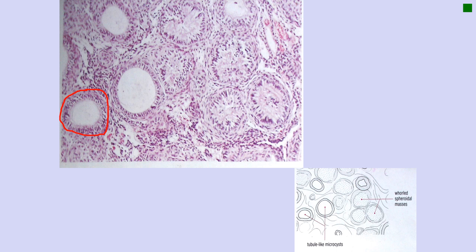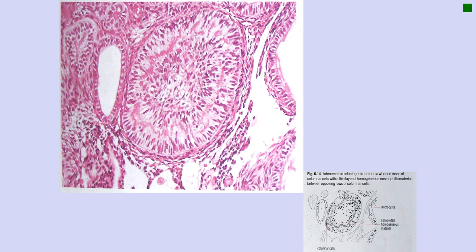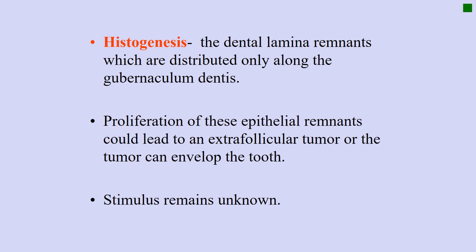The typical whorling is described as a rosette pattern — similar to the arrangement of petals of a rose. You can see the microcyst formation, the duct-like arrangement, and convoluted homogeneous material between the whorling rosette pattern of tumor cells. It is believed that this tumor arises from remnants of the dental lamina distributed along the gubernaculum dentis — the cord left after degeneration of the reduced enamel epithelium.